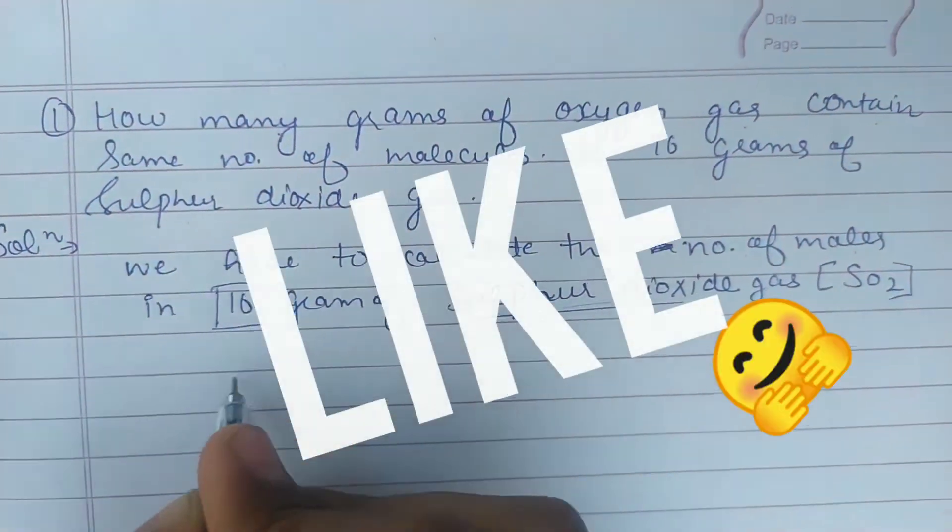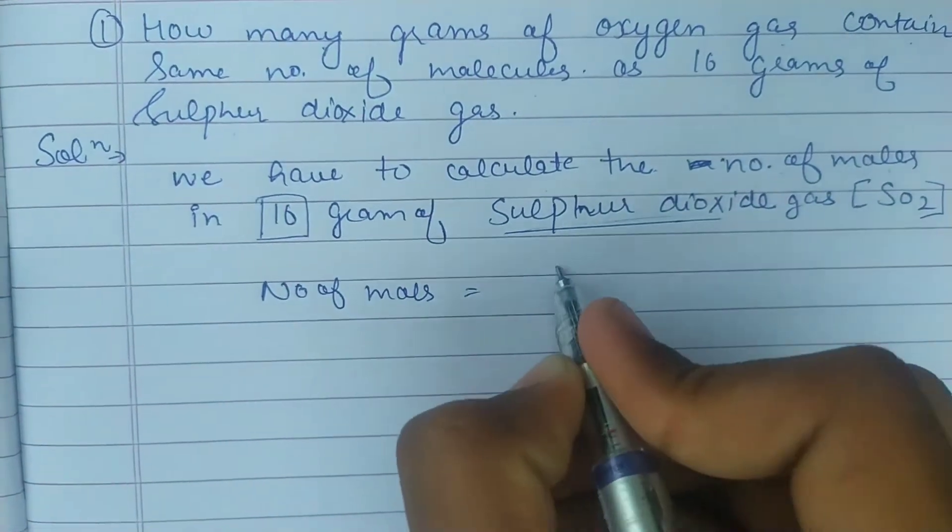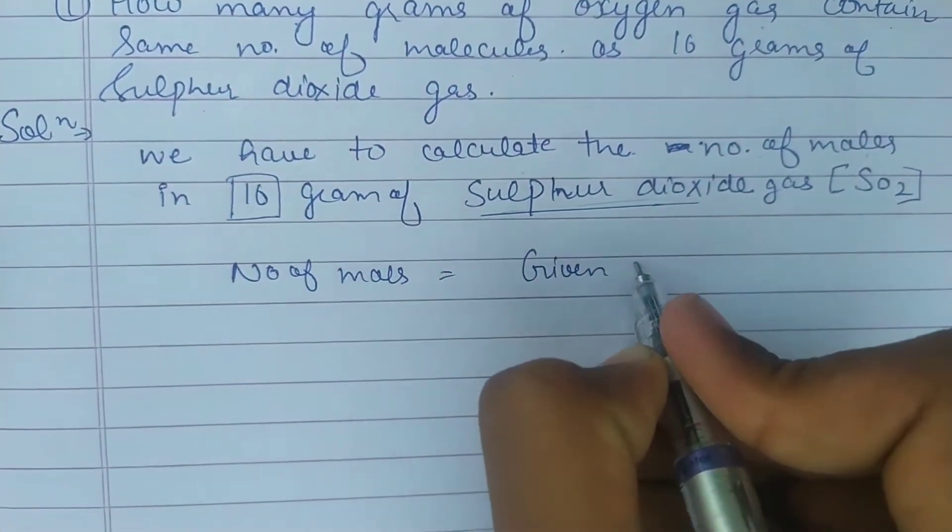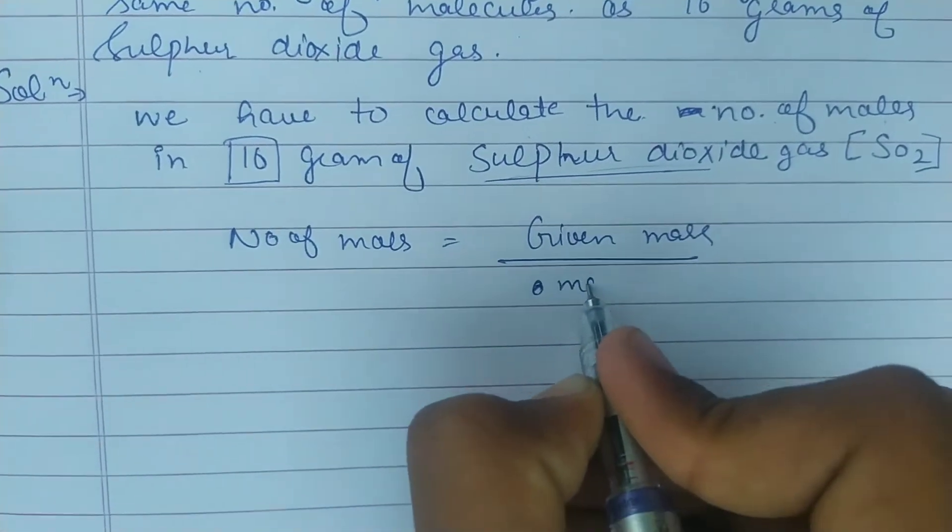First we calculate the number of moles. The formula is number of moles equals given mass divided by gram atomic or molecular mass.